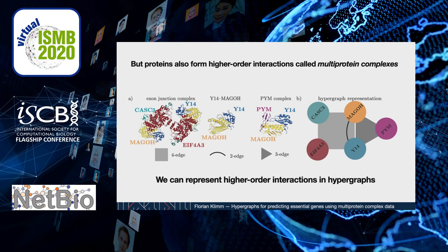The exon junction complex, for example, consists of four different proteins, and the Pym complex consists of three different proteins. We can represent such higher-order interactions in a hypergraph. A hypergraph is a mathematical structure that consists of nodes and hyperedges. Hyperedges are a generalization of edges which connect not only nodes pairwise but also in higher orders.